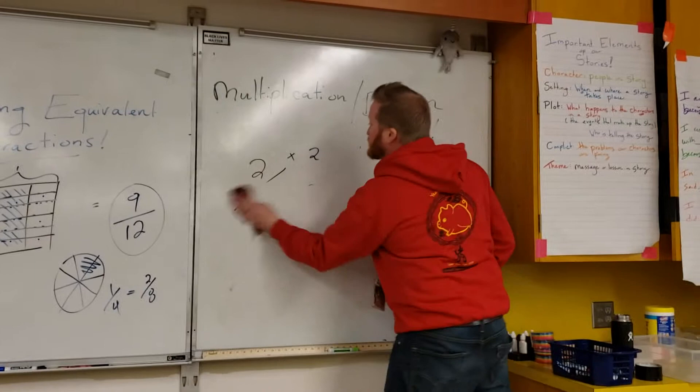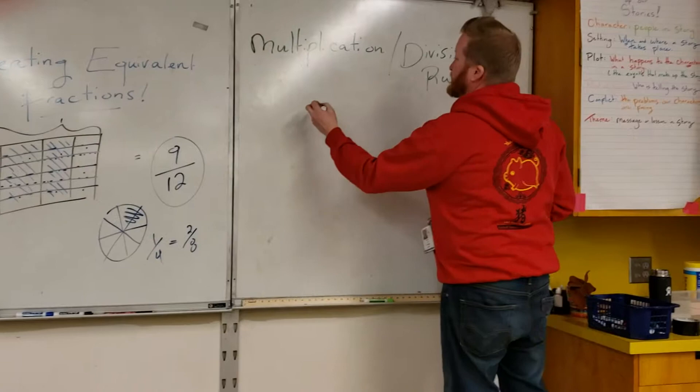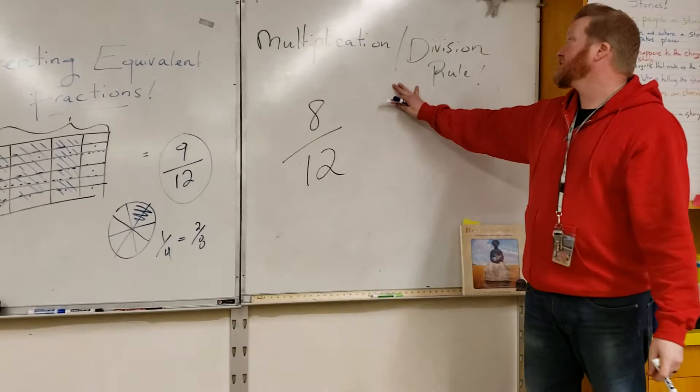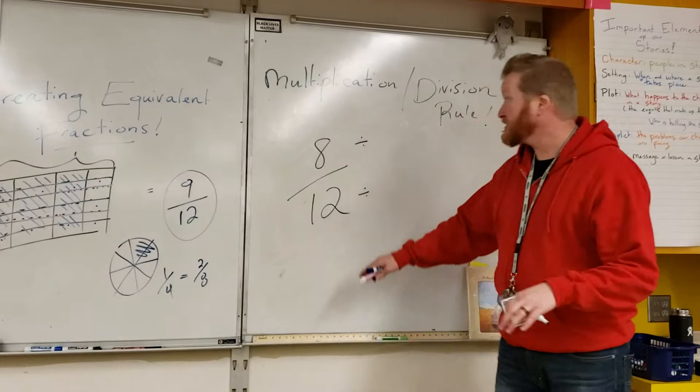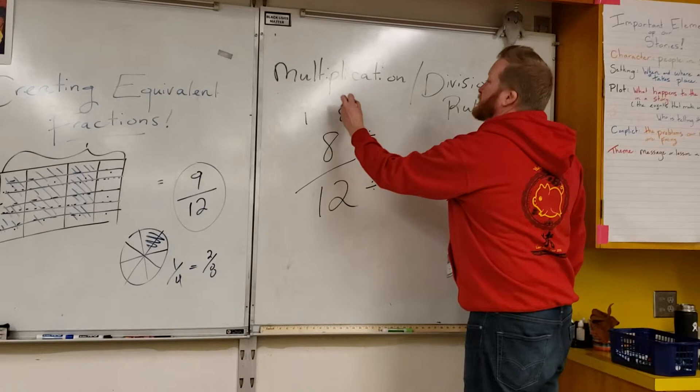We are very quickly going to use the division rule as well. Let's say I have the fraction eight-twelfths. This is the inverse, the reverse of the multiplication rule, in which I am going to divide the numerator and the denominator by the same number. The only difference with this one is I need to find a common factor of both numbers.